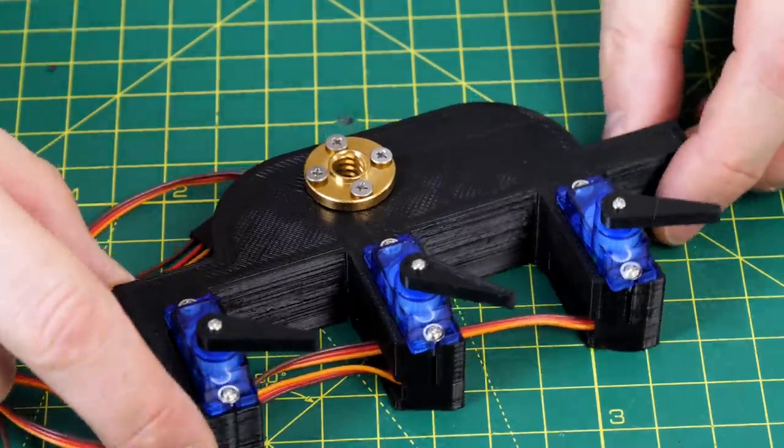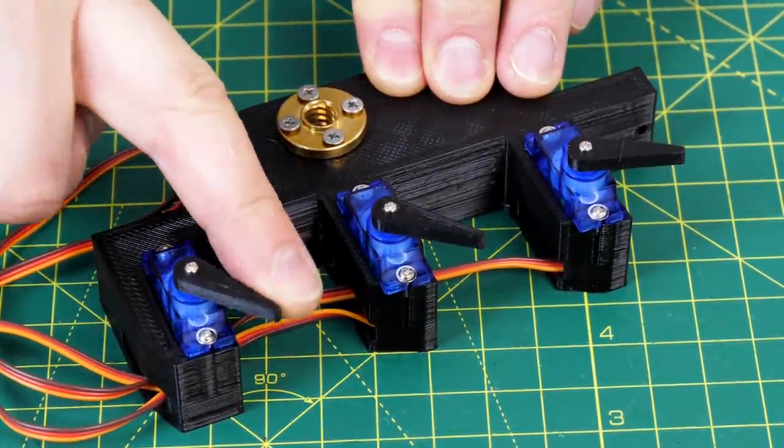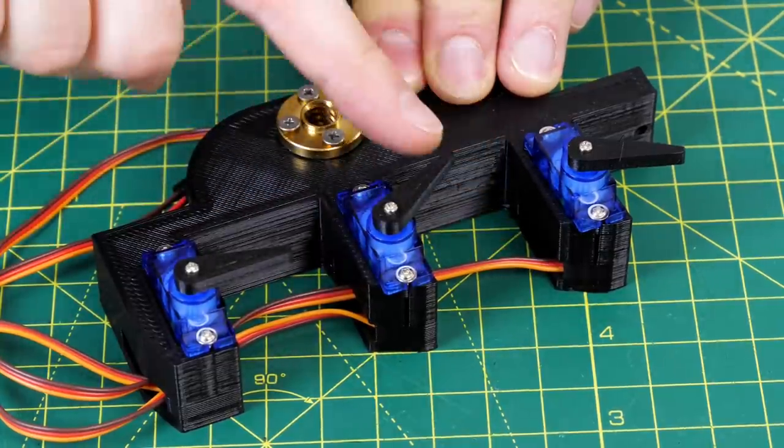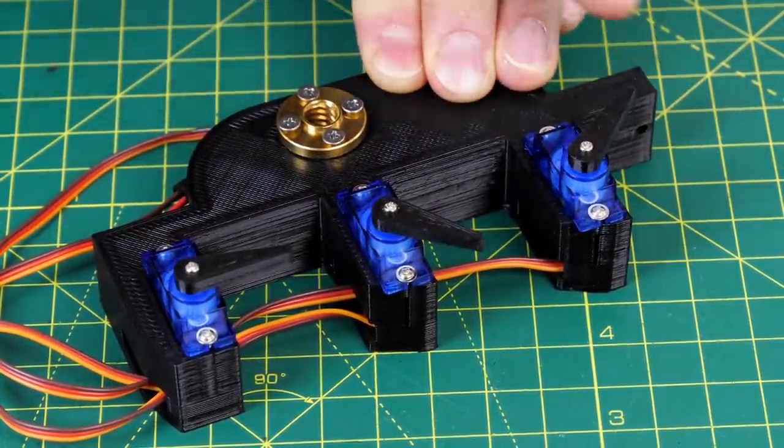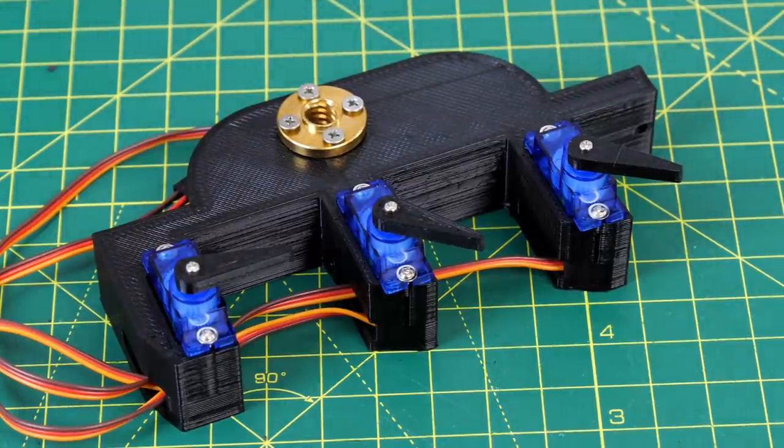And that looks like this which is three servos with custom servo horns I printed to make them slightly longer so they reach far enough and you'll also notice there's a nut on there which is for a lead screw so we can drive it up and down the same as the mechanical multiplexer we built before.